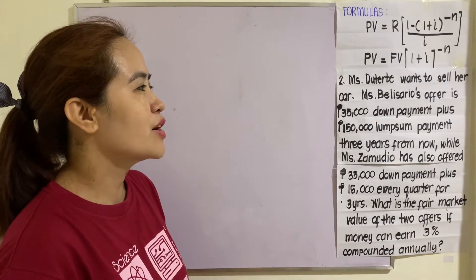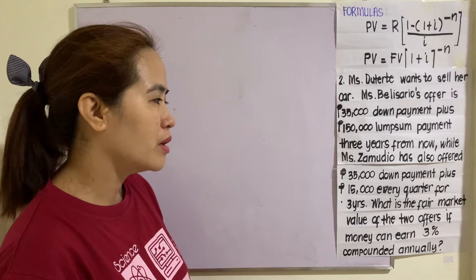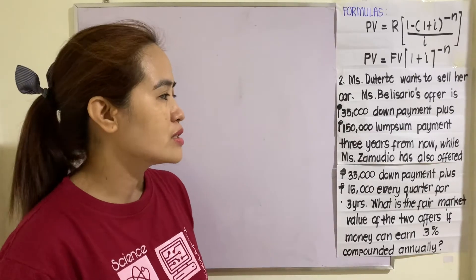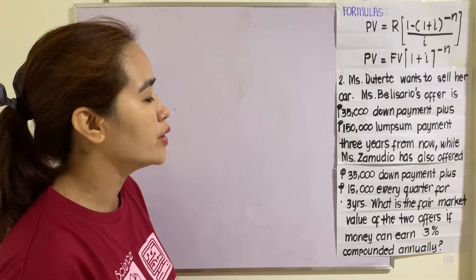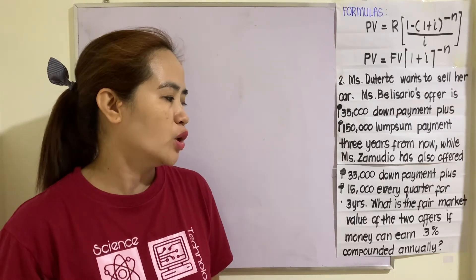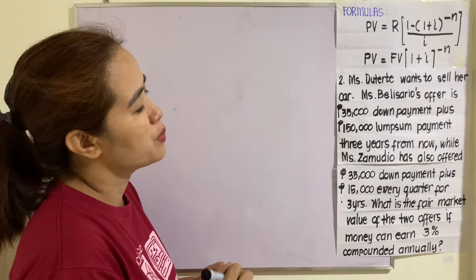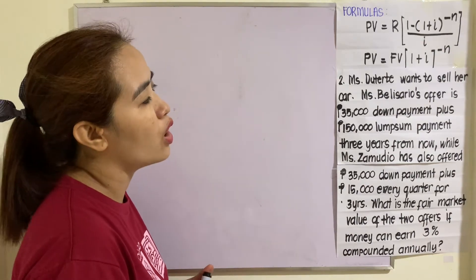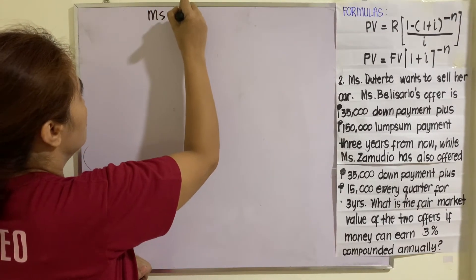Example number two: Mr. Tete wants to sell her car. Miss Belisario's offer is a 35,000 down payment plus a 150,000 lump sum payment three years from now. Miss Zamudio has also offered a 35,000 down payment plus 15,000 every quarter for three years. What is the fair market value of the two offers if money can earn three percent compounded annually?